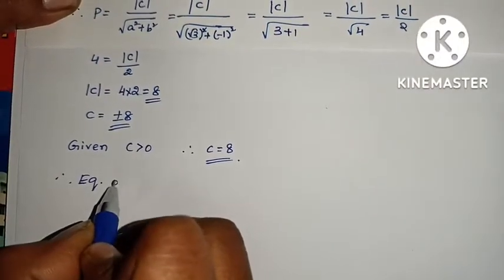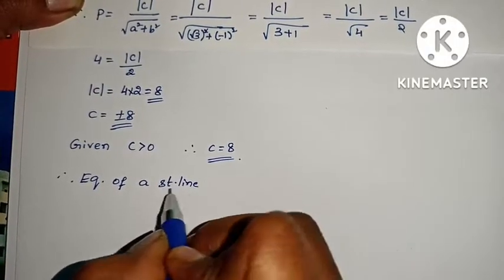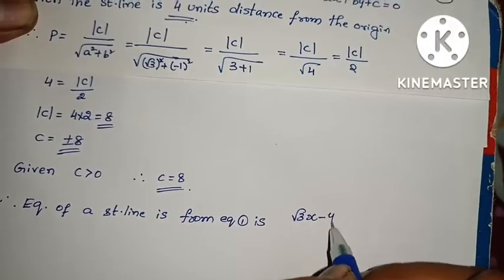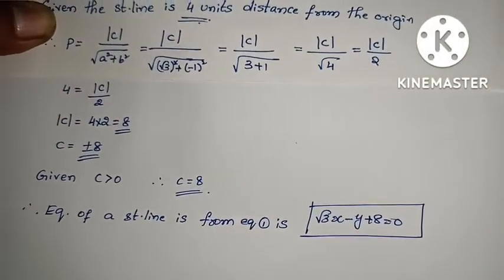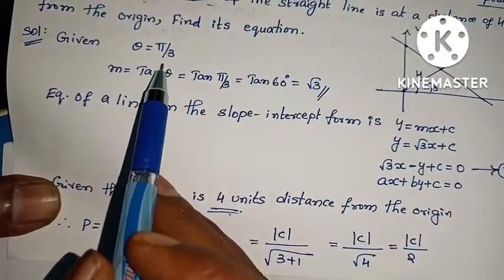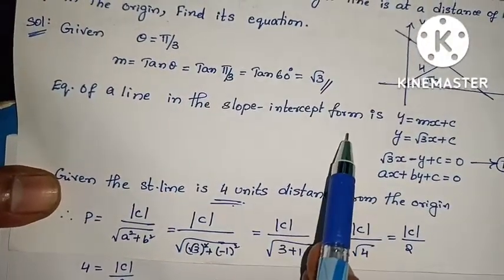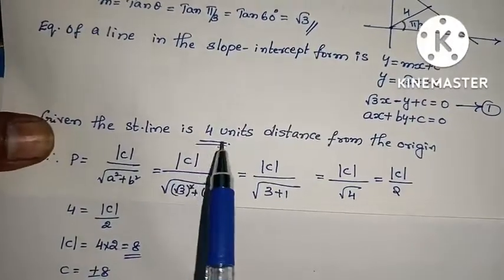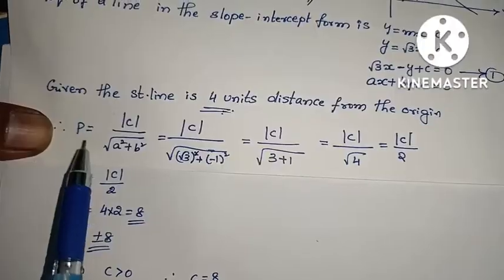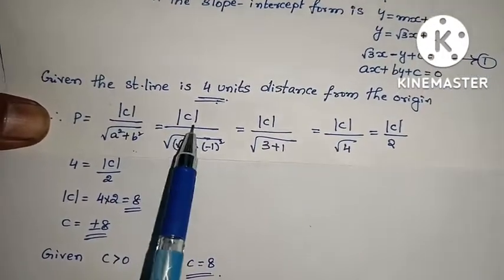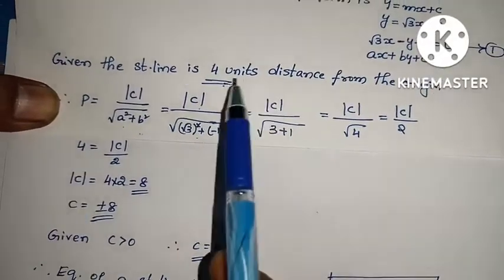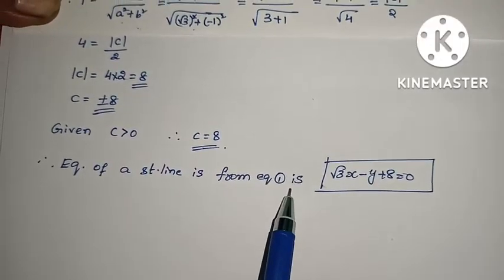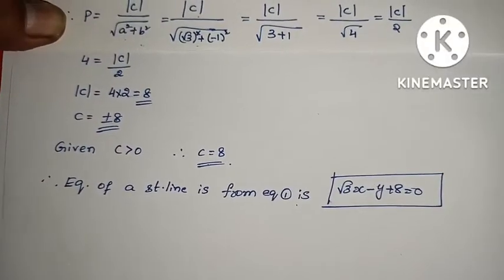Therefore the equation of the straight line is √3·x - y + 8 = 0. Problem complete. To summarize: find θ, get m = tan θ, use slope-intercept form y = mx + c to get the line equation, then use the distance-from-origin formula p = |c| / √(a² + b²). Substitute p = 4, solve for c = ±8. Since positive y-intercept is given, c = 8, giving √3·x - y + 8 = 0.